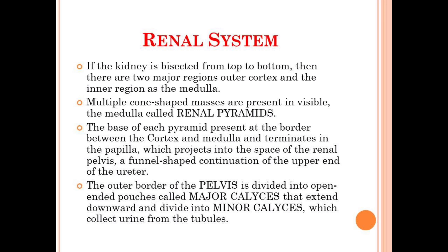If the kidney is bisected or divided from top to bottom, there are two major regions: the outer region will be the cortex and the inner region will be the medulla. You might have seen these structures in your anatomy lab — just take a knife and cut the kidney from top to bottom. The region in the periphery or the outer one is called the cortex and the inner region is called the medulla. In the medulla there are many cone-shaped structures distinctly visible, called the renal pyramids.